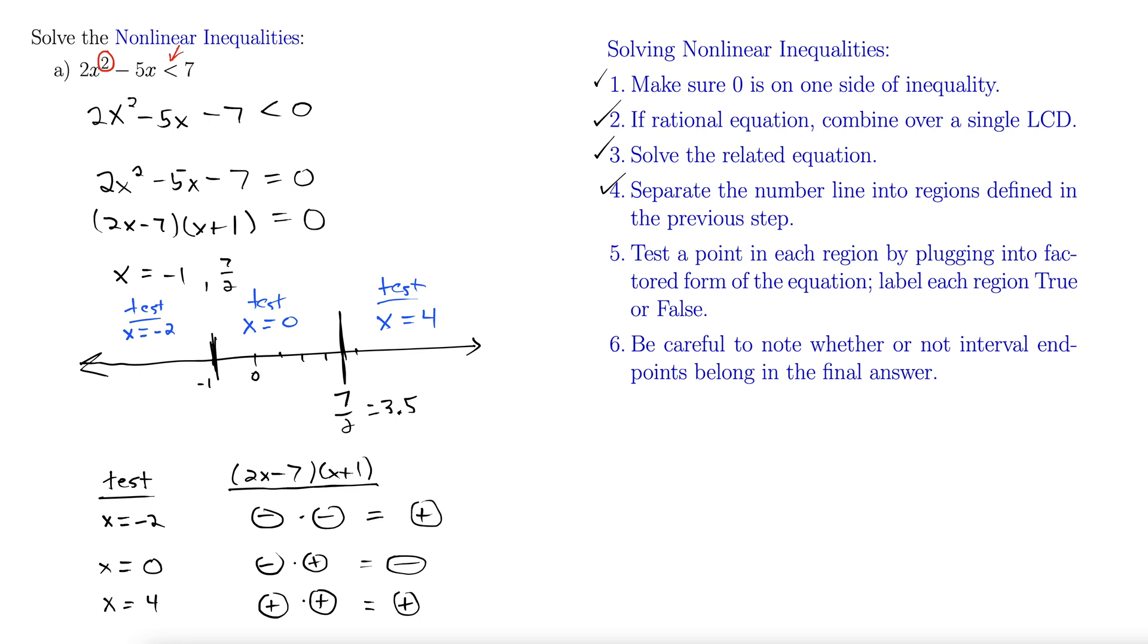Now to label the regions here, we go back to the original problem. The important thing here is this less than 0. So if it's less than 0, we're going to label that true, and if it's greater than or equal to 0, we're going to label that false. Less than 0 is negative, greater than or equal to 0 is positive in this case. So the negatives get the true, and the positives get the false. That leaves us in this middle region true, left region false, right region false, and the answer is the trues.